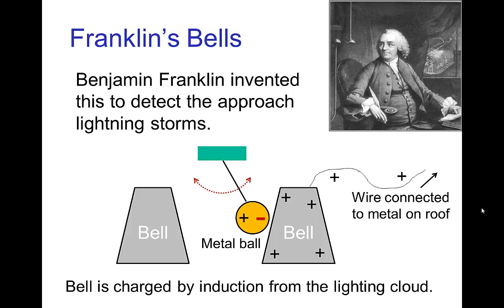Benjamin Franklin studied lightning quite a bit and developed a way of detecting an approaching lightning storm by detecting this induced positive charge on the ground. He set up some metal on his roof and connected it with a wire to a bell which had a metal ball next to it. When the bell became positively charged by induction from the storm, the metal ball — just as we saw the aluminum can attracted to the charged electrophorus plate — would be attracted to the bell, and you would hear a ring telling you a lightning storm was approaching.